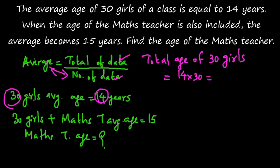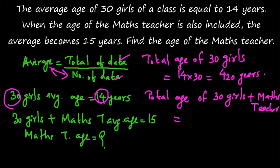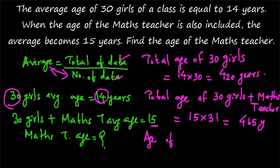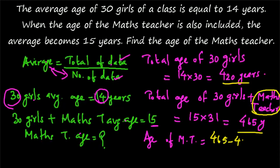14 into 30 equals 420 years. For the second case, the total age of 30 girls plus the math teacher equals 15 — the average — multiplied by 31, since there are now 30 girls plus the math teacher, making 31 people. So 15 into 31 gives the total age of 30 girls plus the math teacher, which is 465 years. Therefore, the age of the math teacher equals 465 minus 420, which gives 45 years.